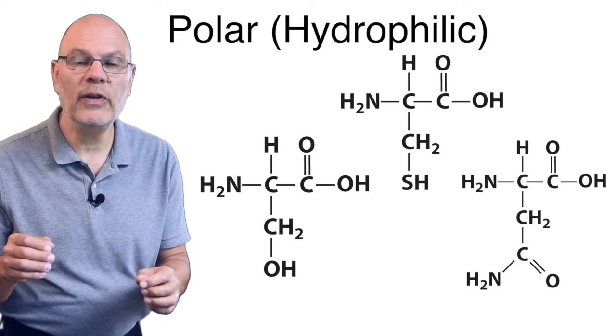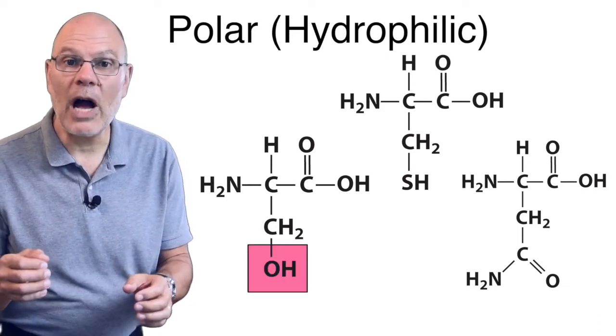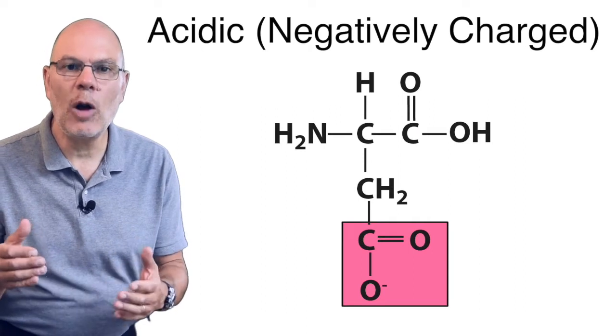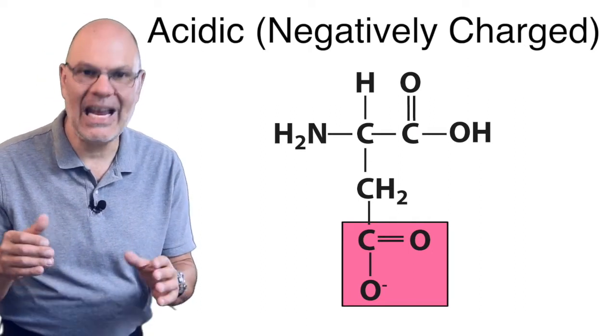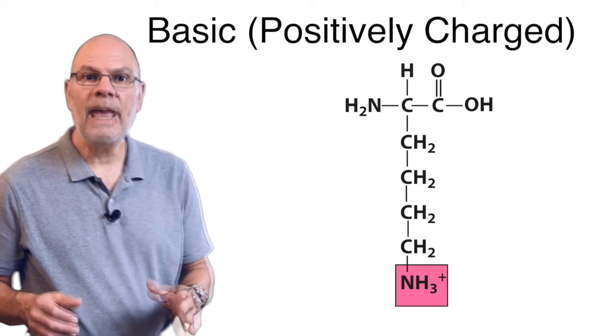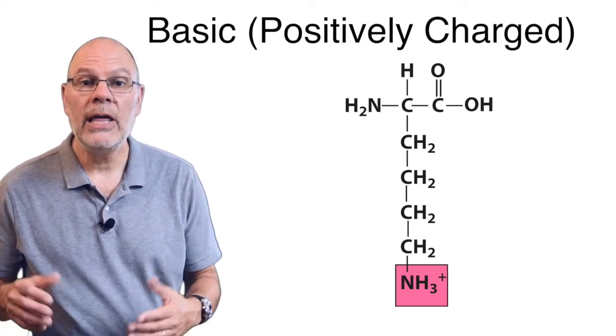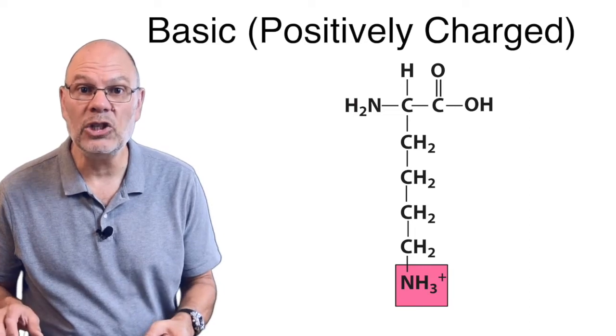Some are polar or hydrophilic. You can tell by the presence of hydroxyl or sulfhydryl or carbonyl. If the side chain ends in a carboxylic acid, it's acidic and it'll have a negative charge. If it ends in an amine, NH3, NH2, or NH all with a plus sign, then it'll be basic and positively charged.